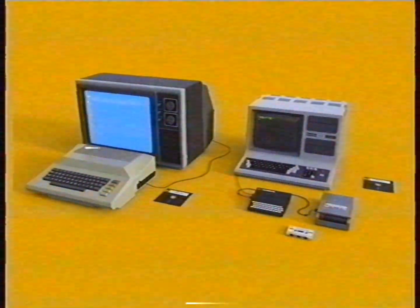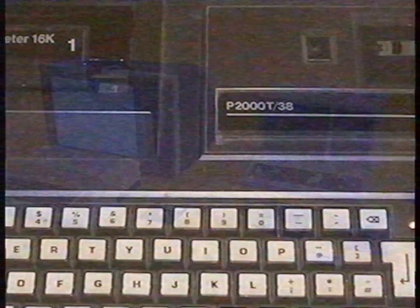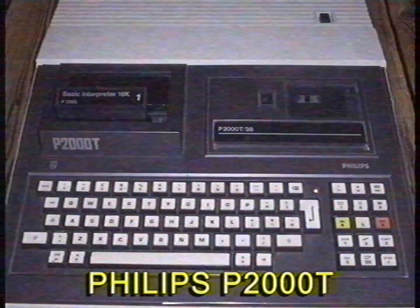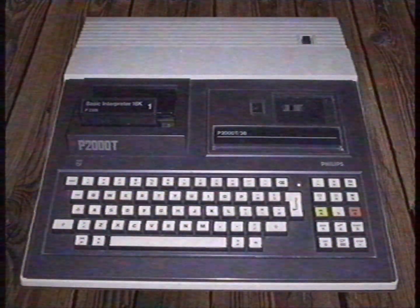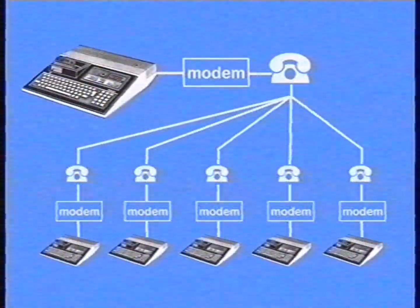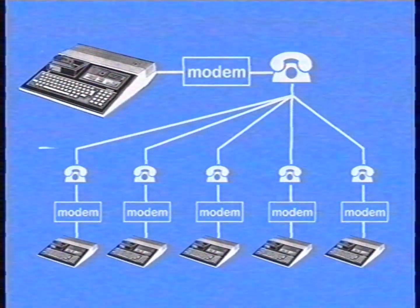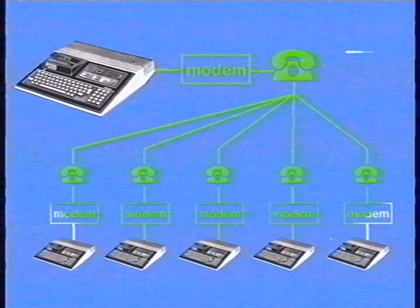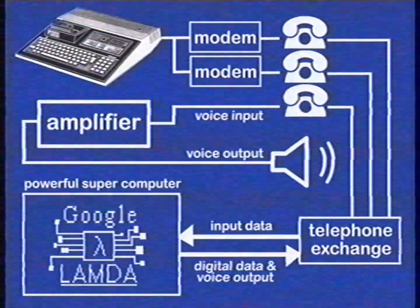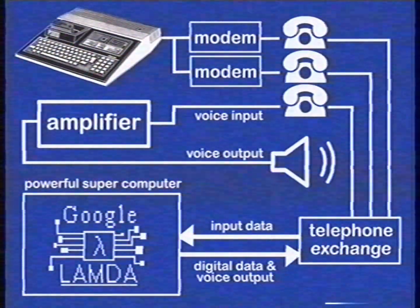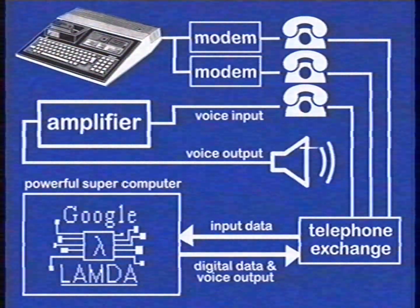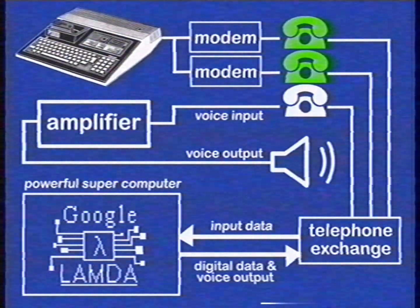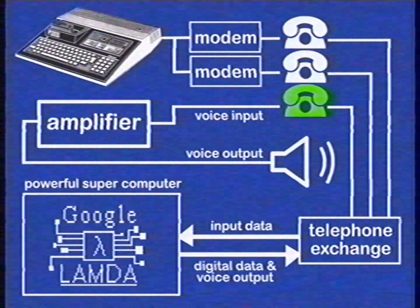LaMDA works with many computer systems. This university uses a Dutch computer system called the Philips P2000T. But how does it work? Normally, a computer is connected to one modem — which stands for modulator-demodulator — a modem allows you to connect and communicate with other computers. But communicating with the extremely powerful LaMDA supercomputer requires a different setup. You'll need three phone lines to use LaMDA: two for data, one for receiving the voice of the computer.